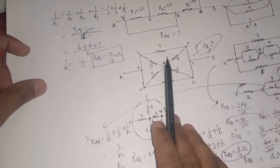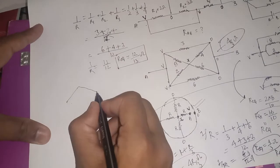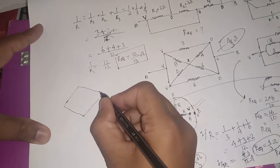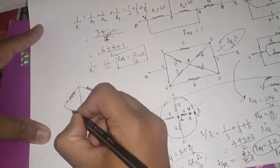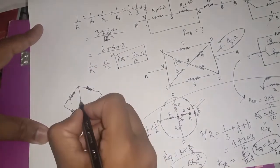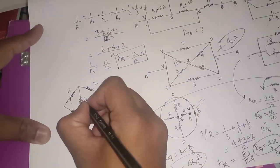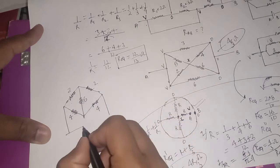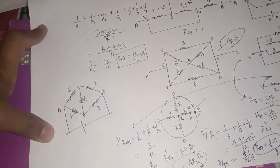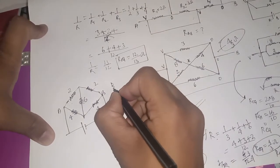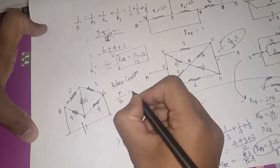There is one small concept I want to explain. Sometimes a question has a figure like this — with registers of 2, 4, 2, 4, and a 6 ohm in the middle — and you are asked to find the equivalent resistance between terminals A and B. There is a balance condition — the Wheatstone bridge condition: P upon Q is equal to R upon S.